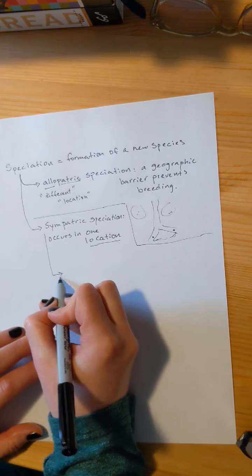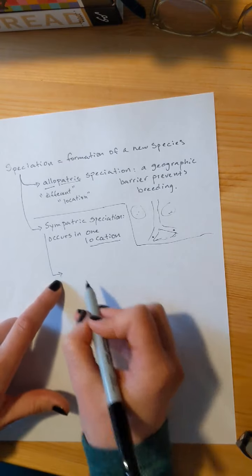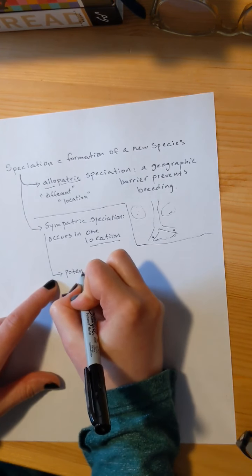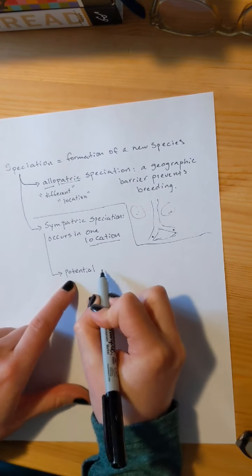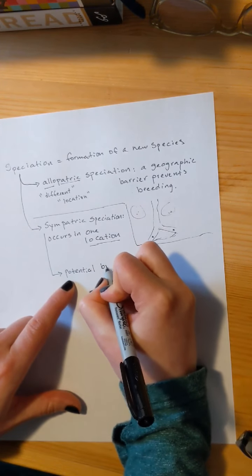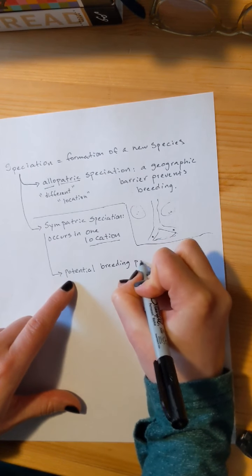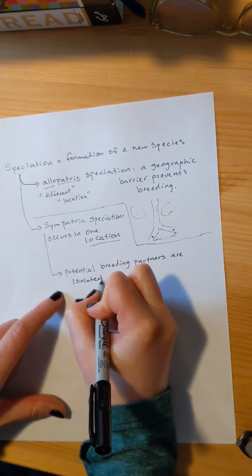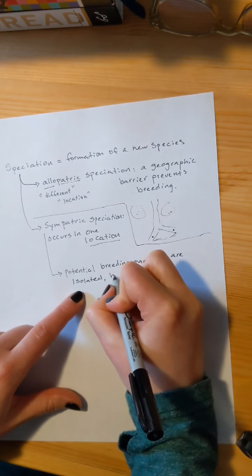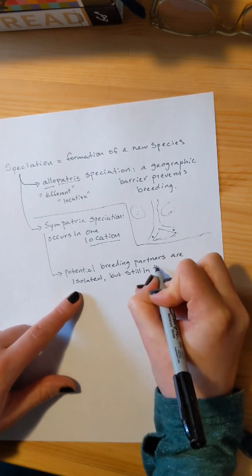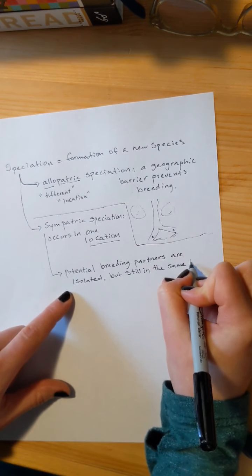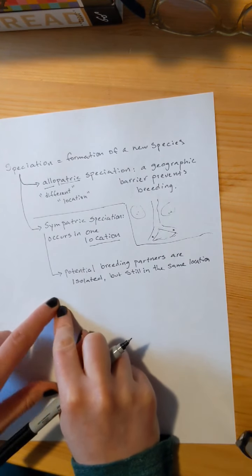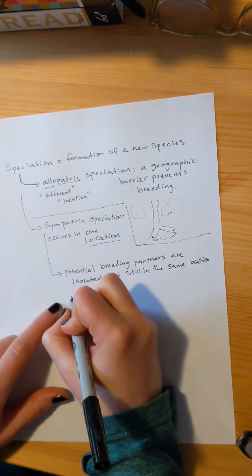There's a couple ways that this works. So if I'm in the same place, I need to have isolation between two of my individuals before I can have speciation. I'm going to describe that as potential breeding partners are isolated some way. But they're still in the same location. How does that happen? It happens in a couple different ways.